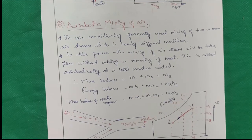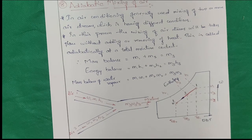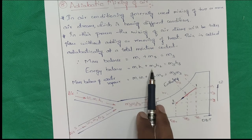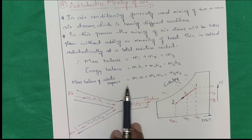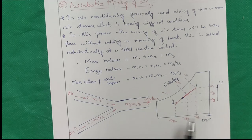Next is adiabatic mixing, which is generally used in air conditioning systems. The mixing of air streams takes place without adding or removing heat — that is called adiabatic mixing. Mass balance: m1 + m2 = m3. Energy balance: m1·h1 + m2·h2 = m3·h3. Specific humidity mass balance: m1·ω1 + m2·ω2 = m3·ω3. This can be represented on the psychrometric chart.